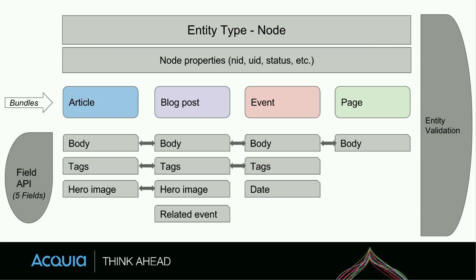There are potential limitations to sharing fields. When thinking about structured data and data modeling, if we had individual non-shared fields for each bundle we'd have 11 extra fields stored in the database — tables for those fields, tables for revisions, potentially related tables added by contrib. On a large site with 5 or 10 content types plus terms and users, the number of fields can proliferate like crazy. So unless you have a good reason not to, you should strongly consider sharing fields — good rule of thumb.